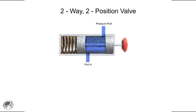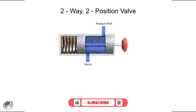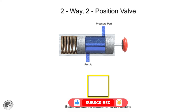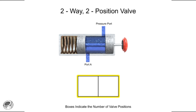To simplify fluid system drawings and schematics, all valves can be represented graphically. Boxes, sometimes called envelopes, are used to indicate the number of valve positions. Since this is a two-position valve, its graphic representation has two adjacent boxes. Continuous lines are used to indicate fluid flow between ports. For complex valves, the ports may also be labeled.